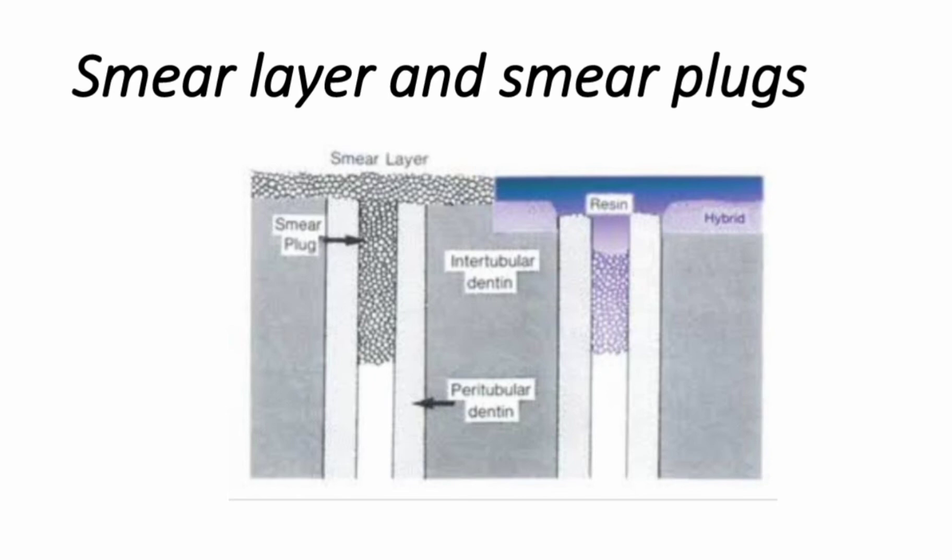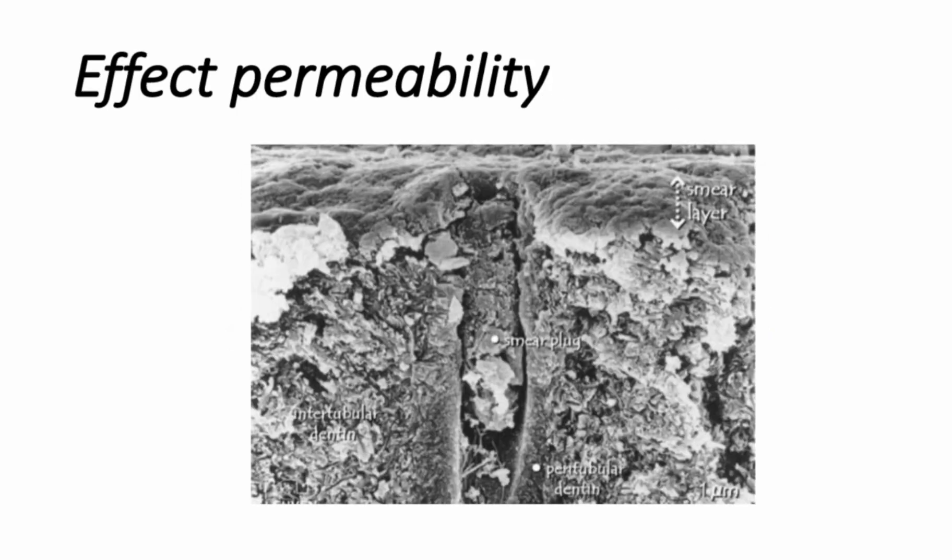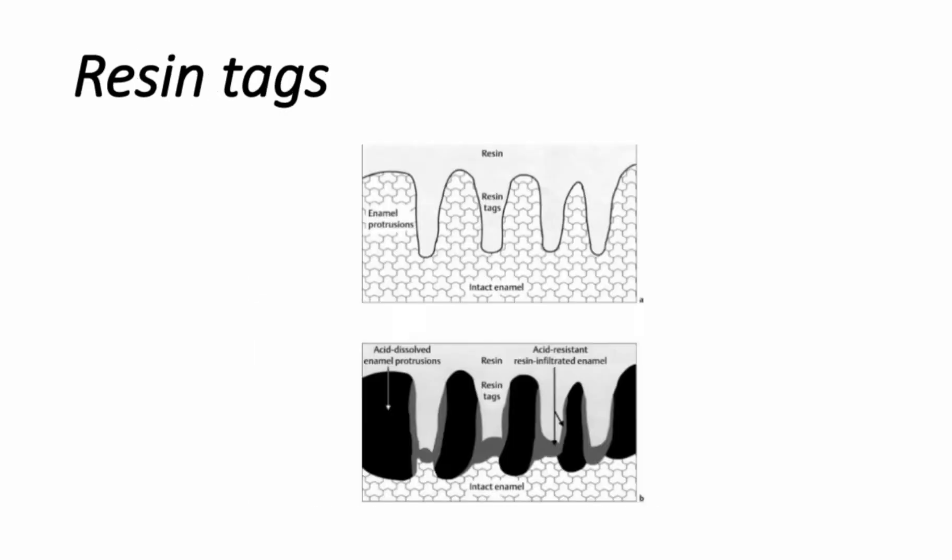The smear layer decreases dentine permeability. Removal of the smear layer and smear plugs with acidic solution results in increased fluid flow onto the exposed dentine. The fluid can interfere with adhesion because of the hydrophobic nature of resins, even if resin tags are created. We will discuss resin tags in detail in our upcoming lectures.